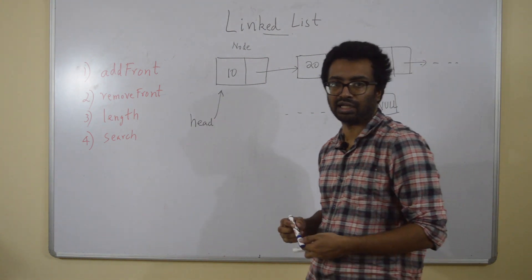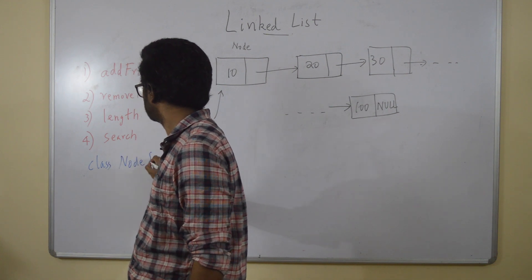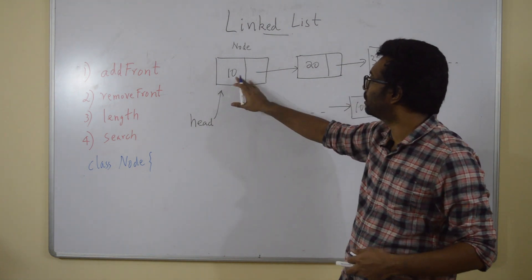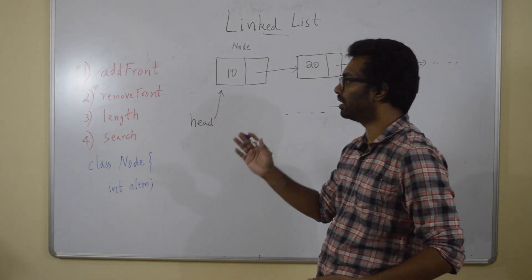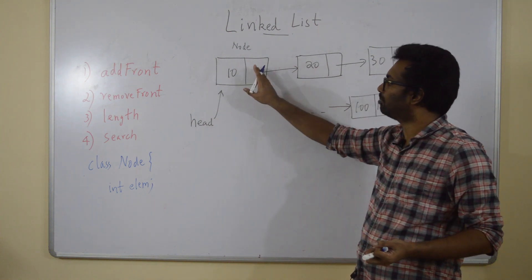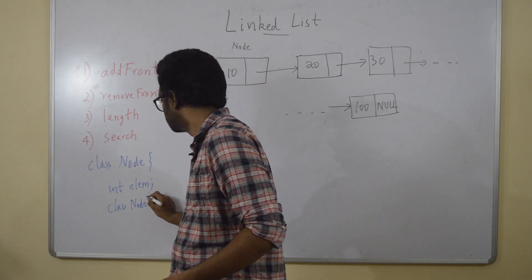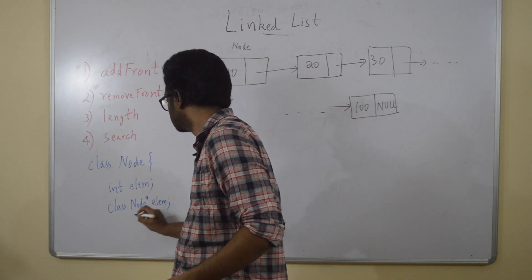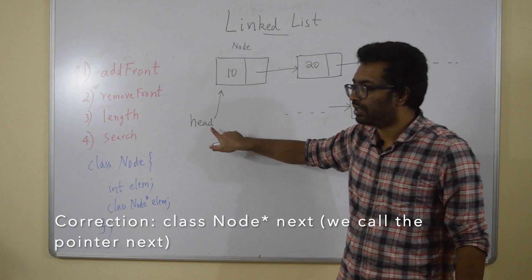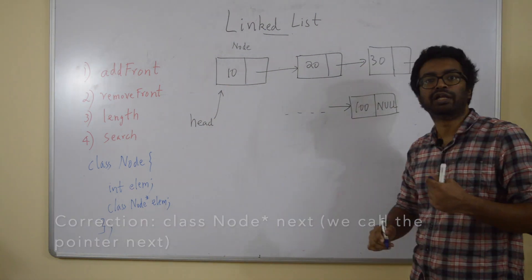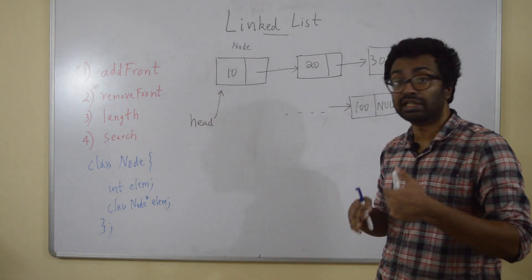There are two things in the node class: the first is an integer element — `int elm` — because it's a linked list of integers. The second is a pointer to a node itself. So I'll write: class node, and head is a pointer of type class node. We have now written the class for node.